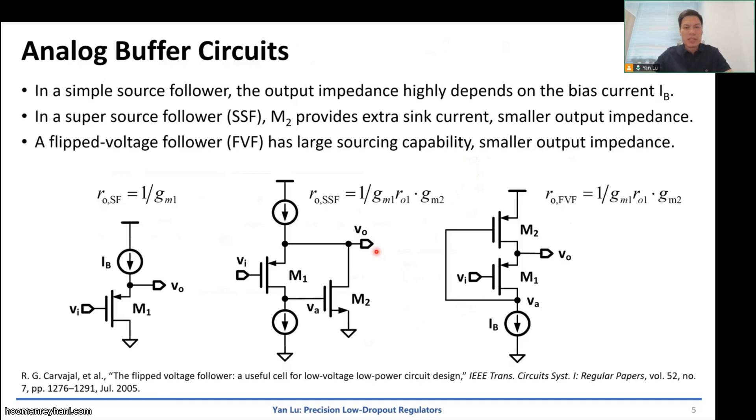And then we can consider how to design the buffer. We have listed a couple of analog circuit buffers here. The simplest one is a source follower. We can use a single transistor with a bias current to implement the buffer. Then the output impedance will be 1 over gm. The output impedance will highly depend on the bias current, which will be power consuming.